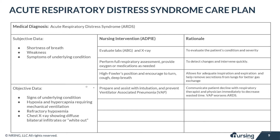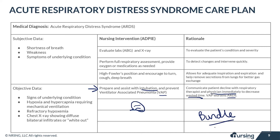Prepare your patient and assist with intubation. It's critically important to communicate patient decline with the respiratory therapist and physician immediately to decrease wasted time. Once the patient is intubated and on the ventilator, do everything possible to prevent ventilator-associated pneumonia, as VAP worsens ARDS. Most facilities have a VAP bundle to help prevent this.